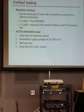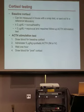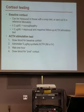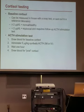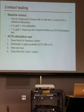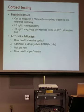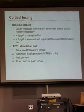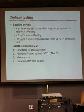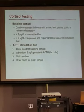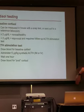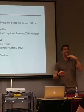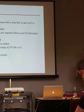The ACTH stim test measures cortisol, then gives an injection of ACTH. ACTH tells the adrenal glands to make more cortisol. If the adrenal glands are functioning normally, when you inject ACTH and measure cortisol an hour later, it should skyrocket. If the adrenal glands aren't working well, they won't respond to the ACTH and you'll see a flat test.